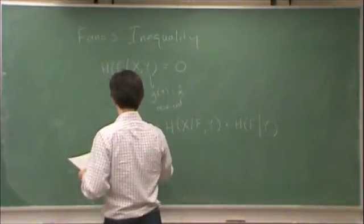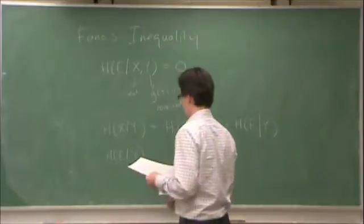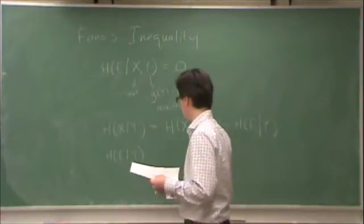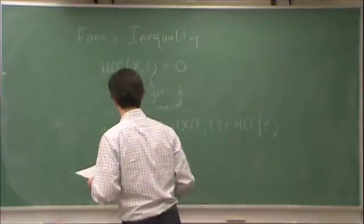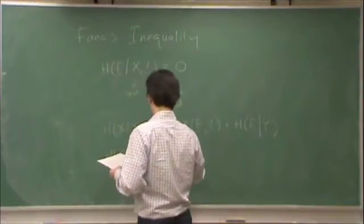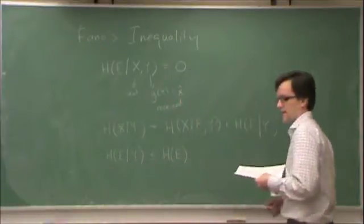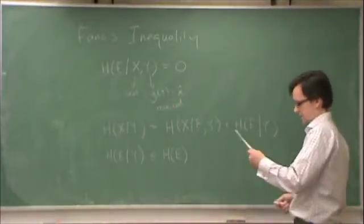Okay, now let's examine these two terms. h of e given y. H of e given y, I don't really know what that is, but I do know that if I condition entropy on anything, it reduces entropy. So, the entropy of e knowing y is less than or equal to the entropy of e.